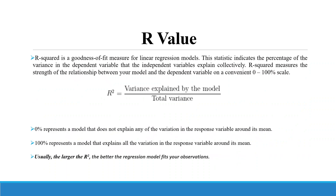The software will generate the R value. R square is a goodness of fit measure for linear regression model. This statistic indicates the percentage of the variance in the dependent variable that the independent variables explain collectively. R square measures the strength of the relationship between the model and the dependent variable on a convenient 0 to 100% scale. The R square is the amount of variance explained by the model divided by the total variance. 0% represents a model that does not explain any of the variation in the response variable around its mean. Usually, the larger the R square, the better the regression model fits to your observation.